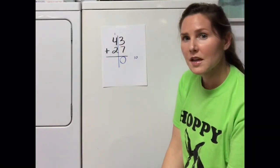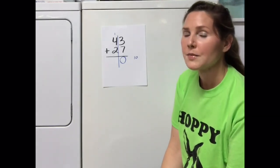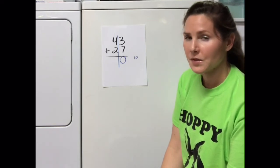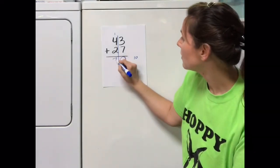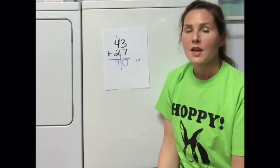The tens column used to say 4 plus 2. Now it says 1 plus 4 plus 2. 1 plus 4 plus 2 is equal to 7. So the answer to the problem is 70.